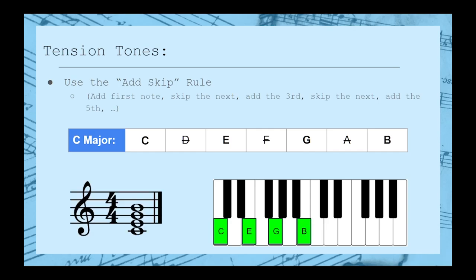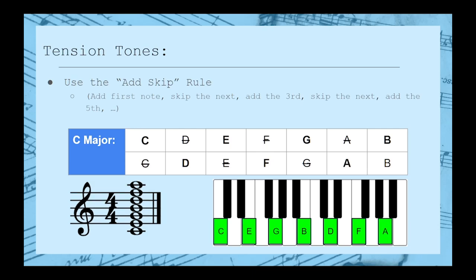But what if we keep going? We can skip the 8th and add the 9th. We can then skip the 10th and add the 11th. And then skip the 12th and add the 13th. And this is as far as we can go, because if we skip the 14th, we'll end up finding ourselves right back at C.